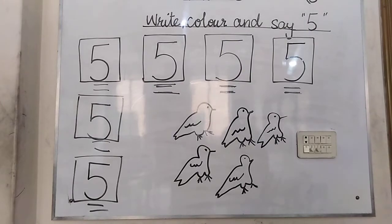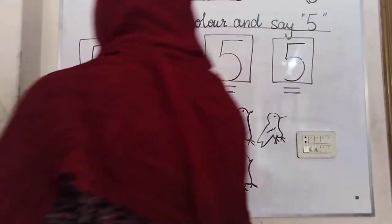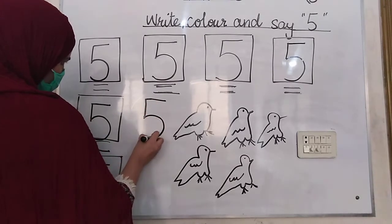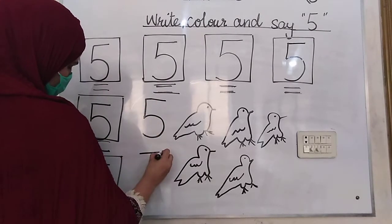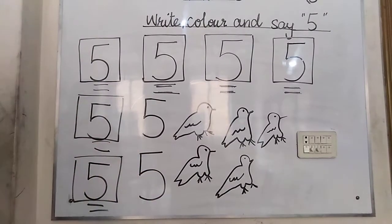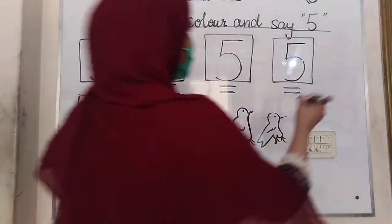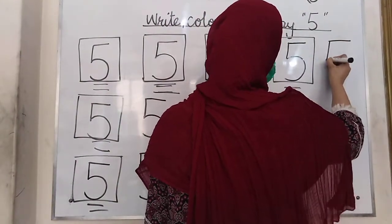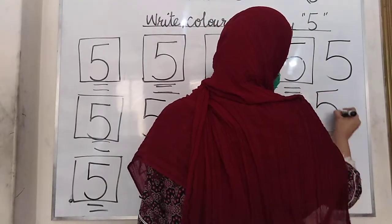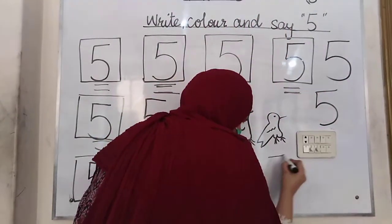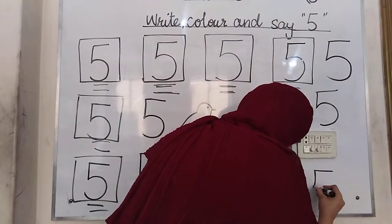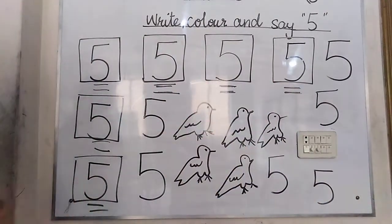So everyone write 5: make a sleeping line, then make a standing line, then make a half circle. Again make a sleeping line, then make a standing line, then make a half circle. Today we are writing 5.